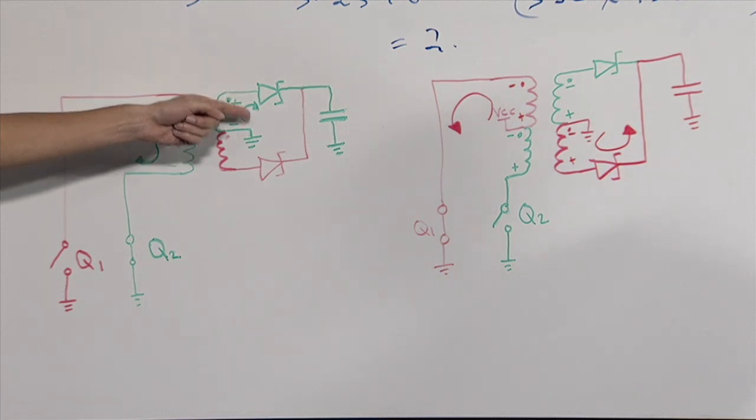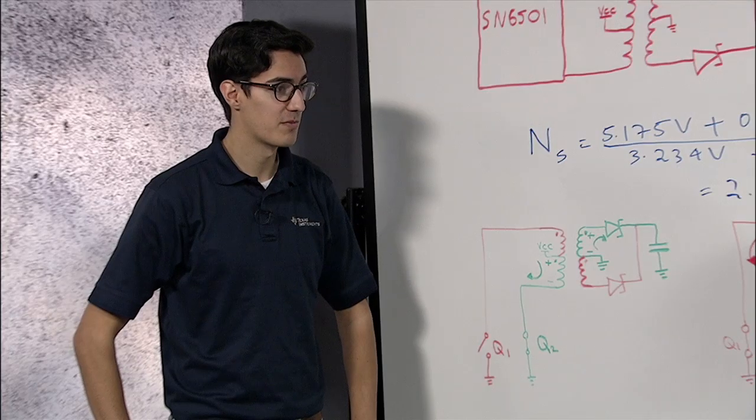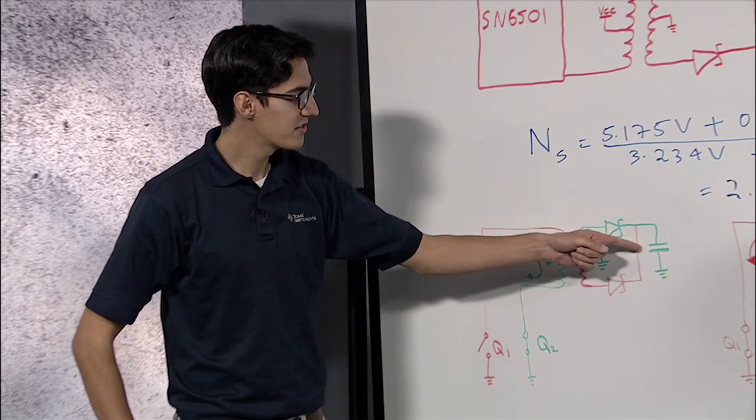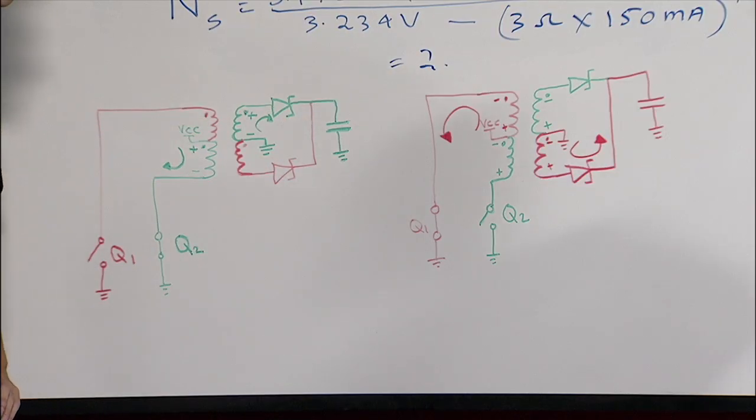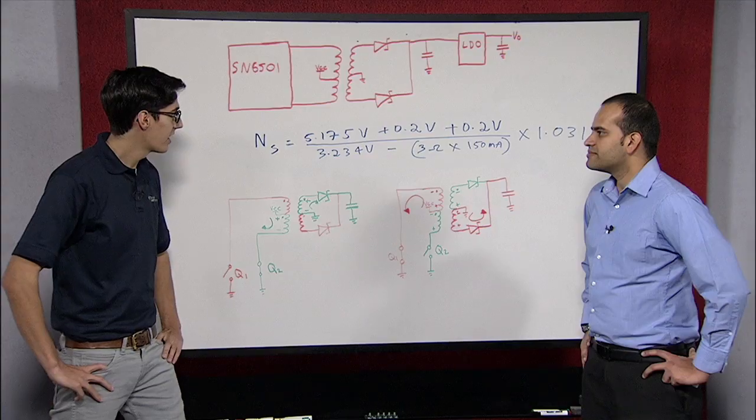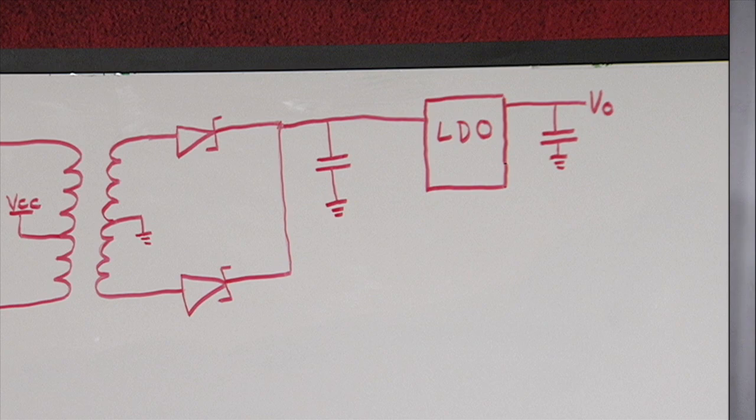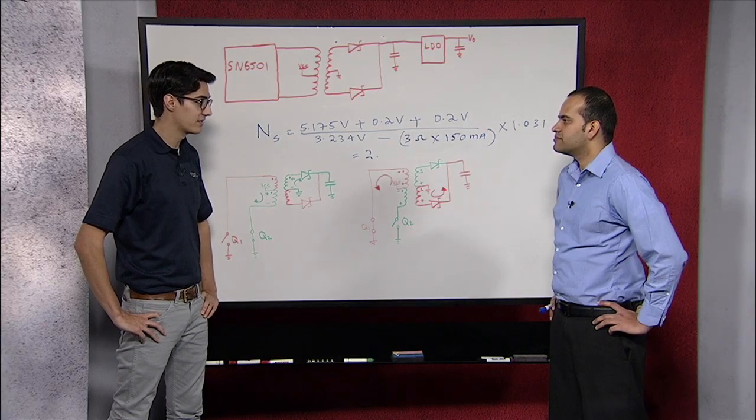Indeed. An important thing to consider when choosing the rectifier diodes is that any voltage drop across them is a loss of efficiency. Since we want as small of a forward voltage drop as possible, Schottky diodes are perfect. The capacitor acts as a buffer and will provide fast current during transients. And if you do decide to use an LDO, it's important to choose one with as small of a dropout voltage as possible, again, to minimize losses.